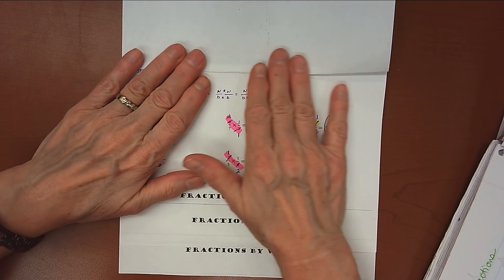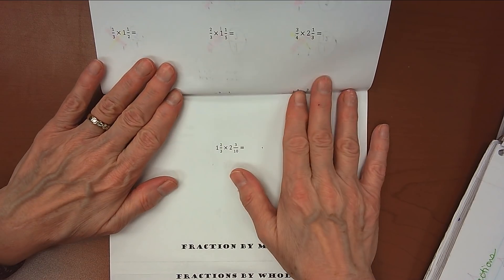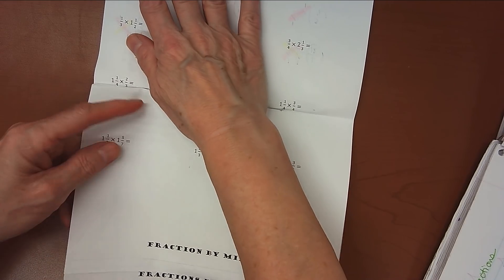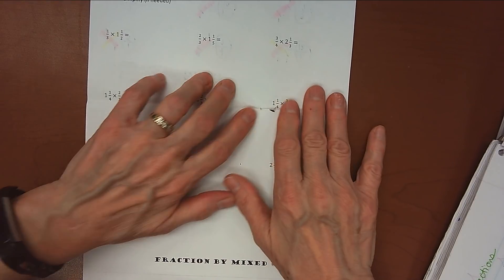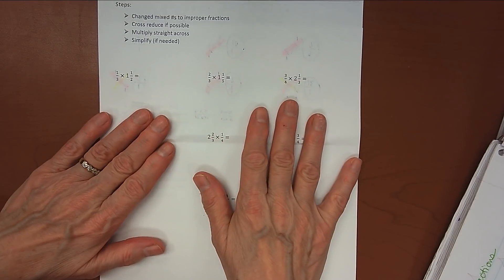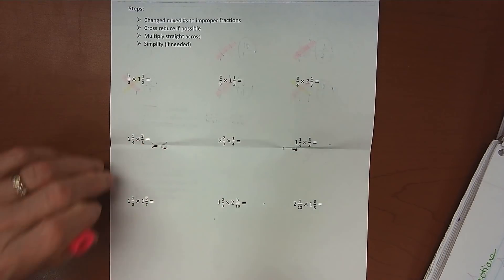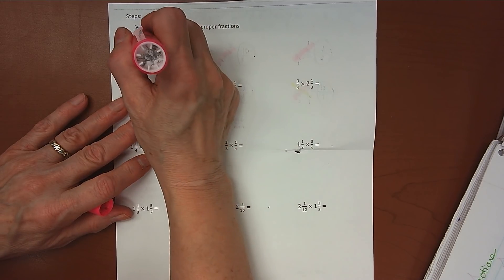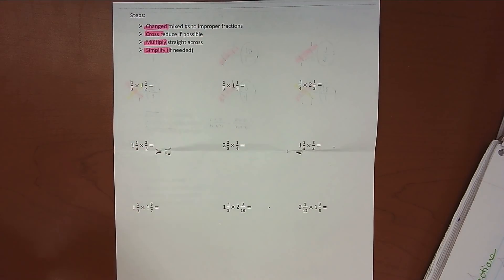So we've done multiplying a fraction by a fraction. Now we're going to talk about multiplying a fraction by a mixed number. So if you open up to the center pages here, you can see I stapled mine a little deep, so I missed some of my problems. I'm going to just open that up a little bit. With multiplying fractions by mixed numbers, we are going to change all of our mixed numbers to improper fractions, then we're going to cross-reduce if we can, and then we're going to multiply straight across, and then we're going to simplify if we need to.